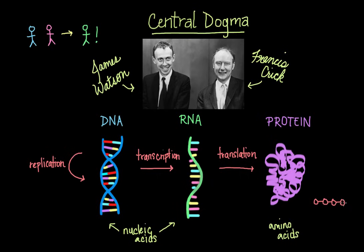This means that the specific sequence of each of these monomers effectively encodes information, and that the transfer of information is faithfully preserved from DNA to RNA to protein. Each polymer sequence is used as a template for the synthesis of the next polymer. You could go into any step in this sequence and determine what the corresponding polymers would look like. In other words, you could take DNA and figure out what the corresponding RNA would look like, and then what the corresponding protein would look like. So this whole process is the central dogma.